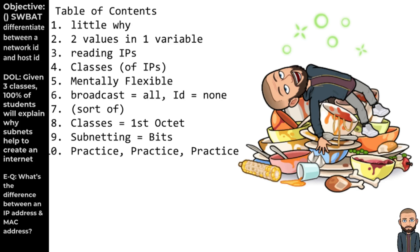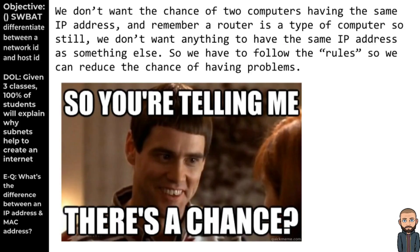There is no device that has that broadcast number — well, it's a 'sort of' because there is a device that has the number. It's just not very useful to communicate with because that device is not requesting any information, web pages, or emails. We'll wrap up by hammering home the idea that if I'm talking about classes, I'm talking about the first octet. If I'm talking about subnetting, I'm talking about the number of bits that make up the network ID. Then we'll practice, practice, practice.